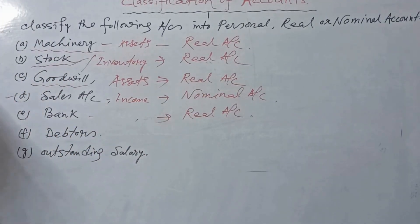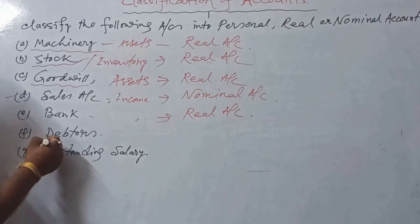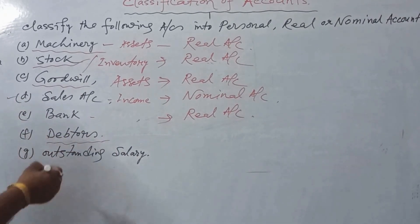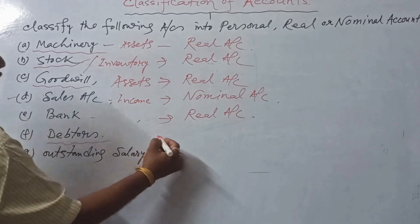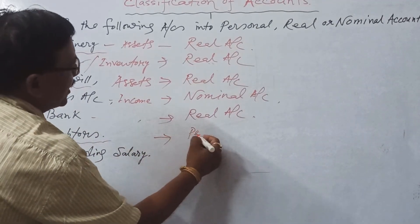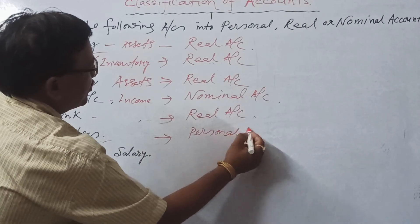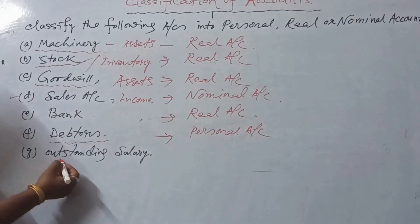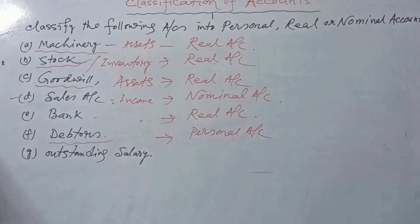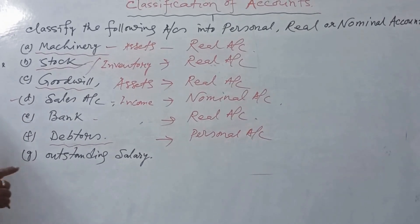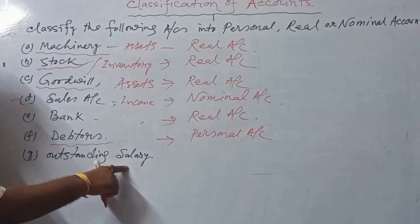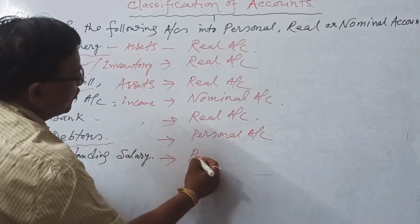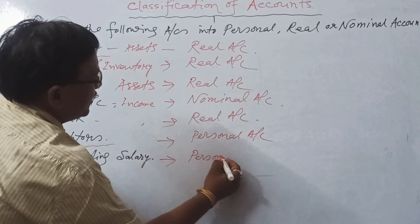Debtors are created when goods are sold on credit. Debtor is a personal account — artificial persons. Outstanding salary represents salary outstanding for particular persons, so it is a representative personal account.